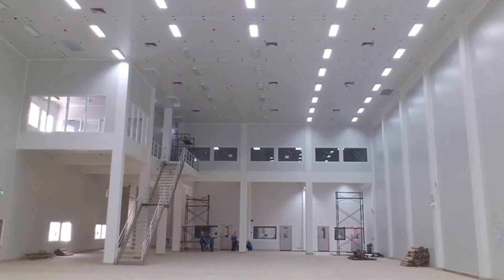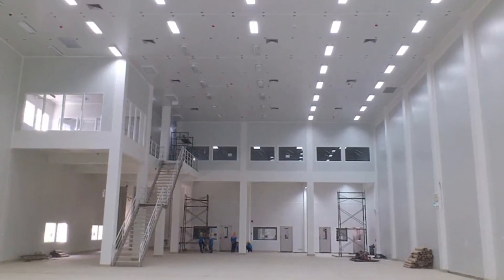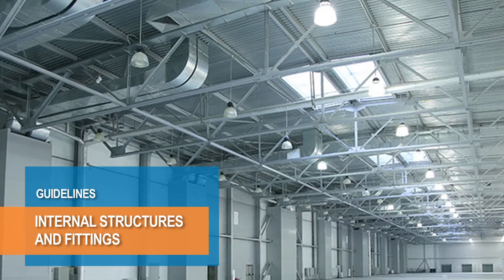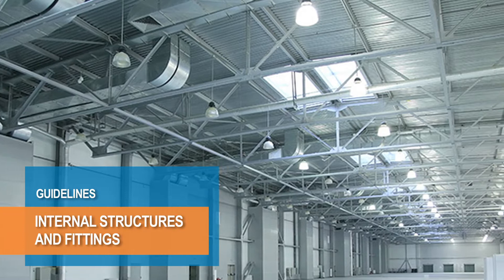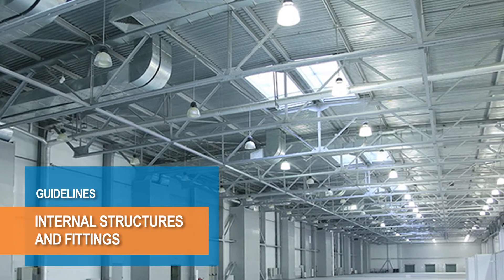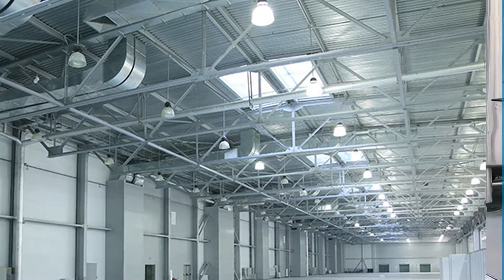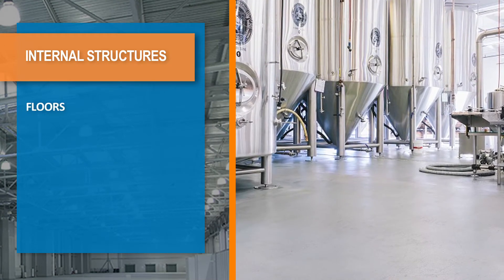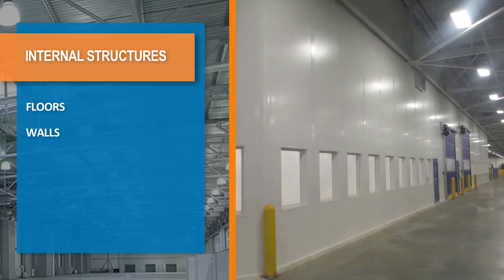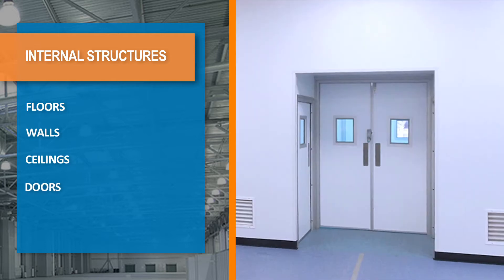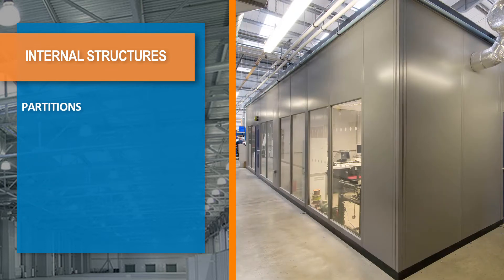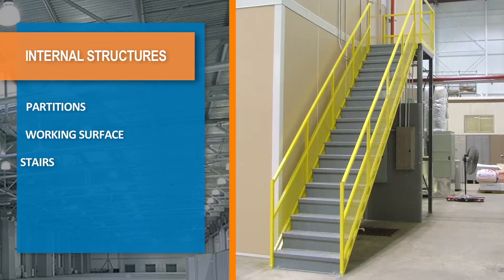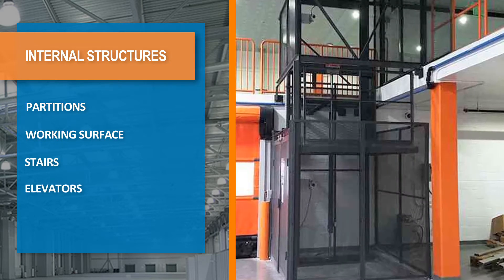In this video we will learn about how to plan and design internal structures and fittings in the establishment to ensure a hygienic working area. Internal structures here refers to floors, walls, ceilings, doors, windows, partitions, working surfaces, stairs, elevators, etc.